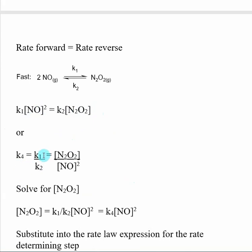Just to make our lives a little easier, we're going to say that K1 divided by K2 equals K4. That's just to make the numbers a little bit easier. Inside of this expression, what we're trying to find is the concentration of N2O2.